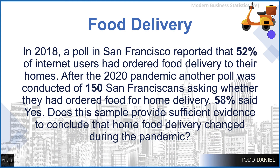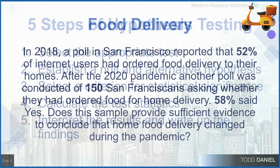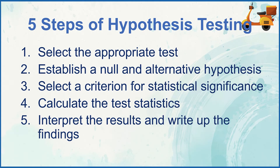Let's learn some more about this research. In 2018, a poll in San Francisco reported that 52% of Internet users had ordered food delivery to their homes. After the 2020 pandemic, another poll was conducted of 150 San Franciscans asking whether they had ordered food for home delivery. 58% said yes. Does this sample provide sufficient evidence to conclude that home food delivery changed during the pandemic? To answer that question, we will use our five steps of hypothesis testing to select the appropriate test, establish the hypotheses, select a level of significance, run the test, interpret the results, and write up the findings.